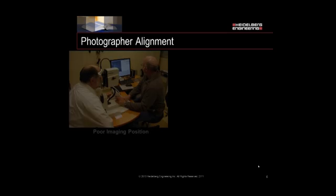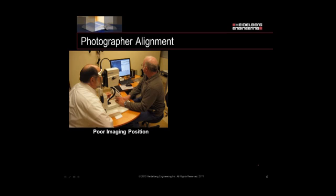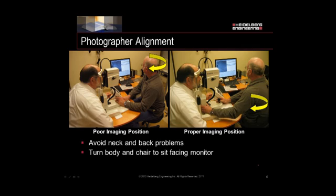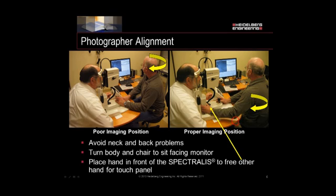Next I'd like to discuss photographer alignment — the way you sit at the camera. Many people sit turned away from the monitor, which causes neck and back problems from turning the head. Instead, turn your body to face the monitor. I like to sit more on the corner of the camera near where the elbow rests. One hand should be placed on the column of the Spectralis and the other on the joystick. If you need to let go of the joystick to grab the mouse, touch panel, or focus on the back of the camera, one hand will always be on the camera itself so you can adjust it if the patient is moving or has difficulty fixating.